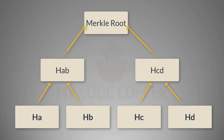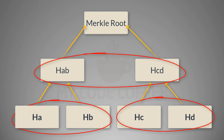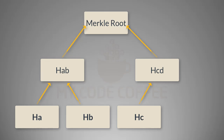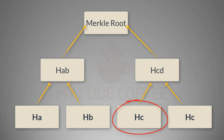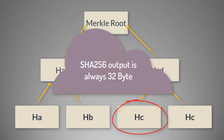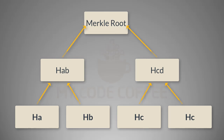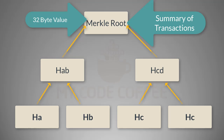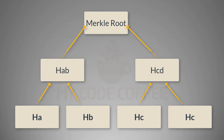You keep on doing that till you get a single 32-byte value — this value is called the Merkle root. Now, as you can see, a Merkle tree needs transactions to be in an even number so that they can form pairs. So if there is an odd number of transactions, the last transaction is repeated to make it even. Since SHA-256 always gives a fixed 32-byte value, no matter how many transactions there are, the Merkle root is always a 32-byte value.